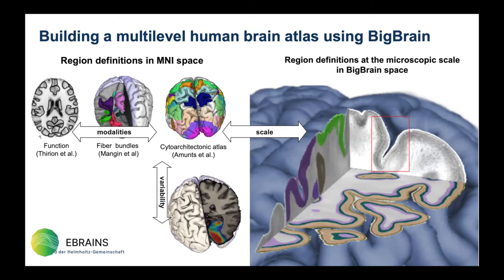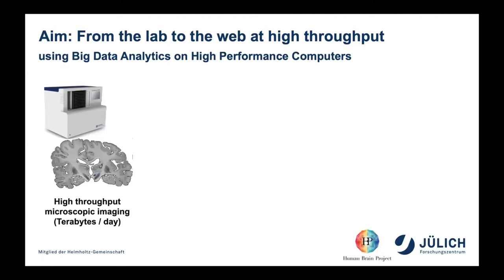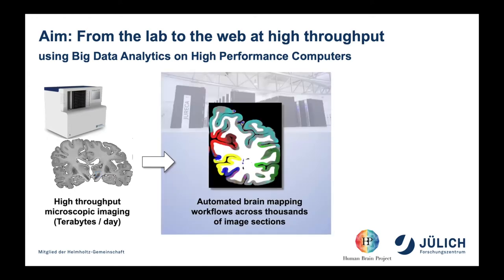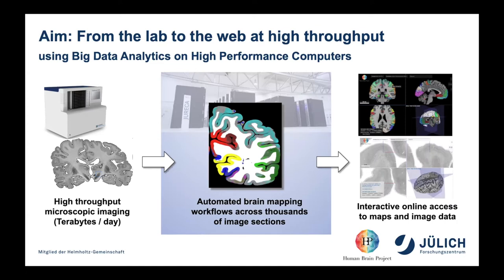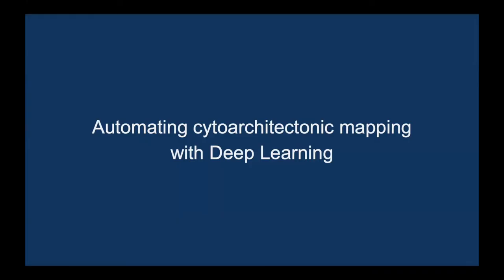This requires us to map these areas in really every single section of the BigBrain — for some areas, thousands of sections — and we want to do this in other brains as well. This is no longer feasible for a human scientist alone. We need high-throughput imaging technology, machine learning, image processing, and high-performance computing, as well as neuroinformatics to provide this data at high resolutions to the community. That is why we are using deep learning to accelerate and increase the degree of automation in cytoarchitectonic mapping.